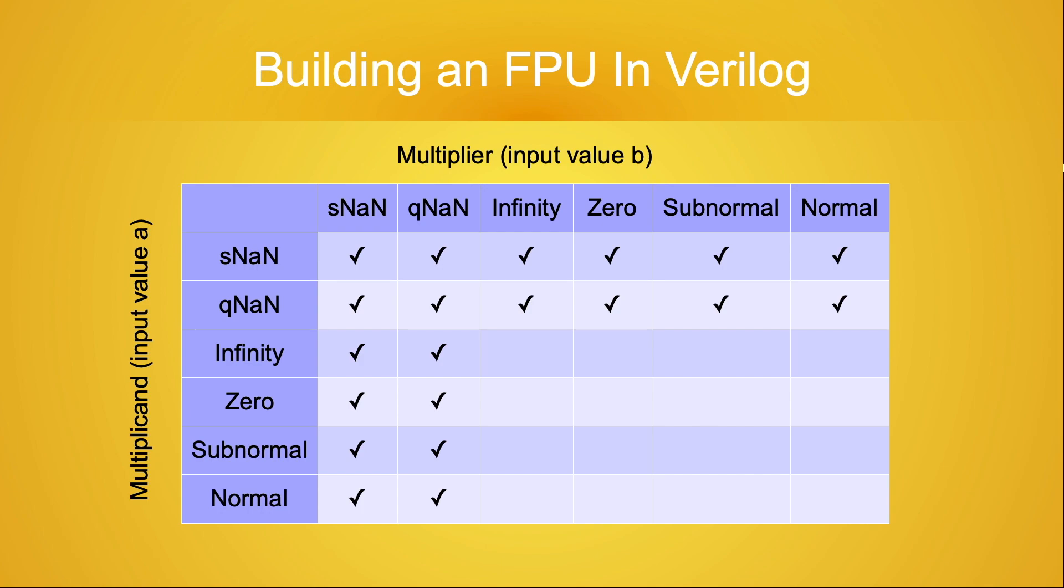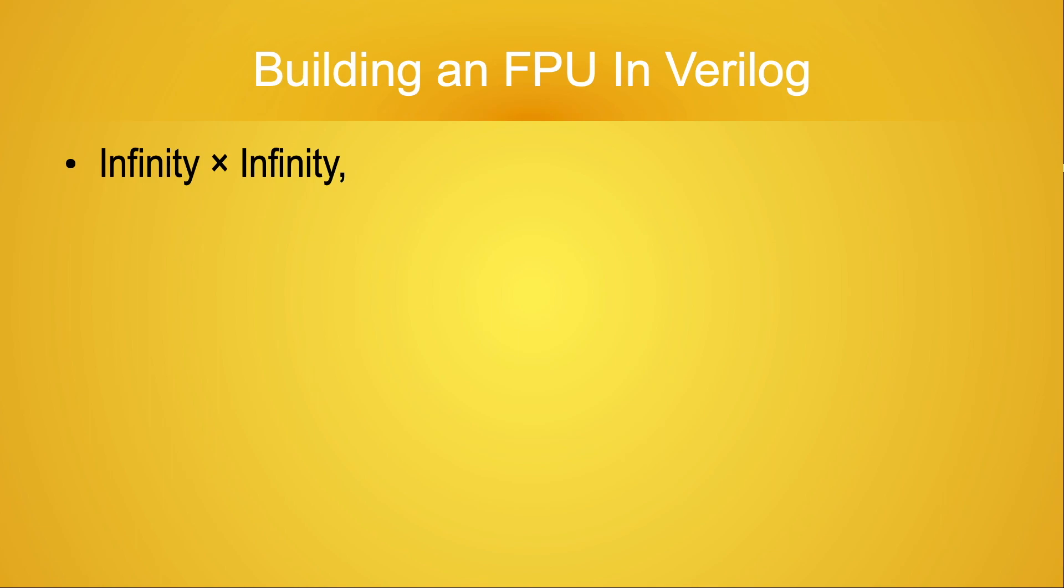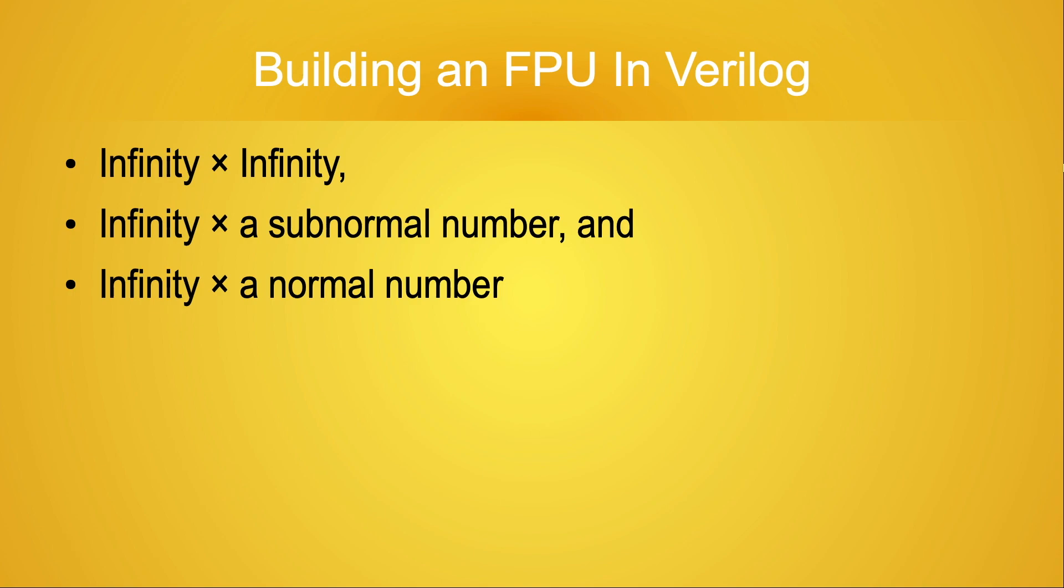The next item on our checklist is infinity. There are three easy cases here. Infinity times infinity is infinity. Infinity times any non-zero number is also infinity. So, infinity times subnormal numbers and infinity times normal numbers also yields a product of infinity, but you knew that already.